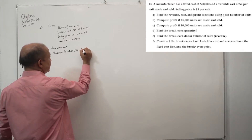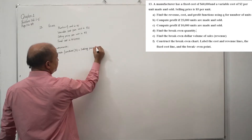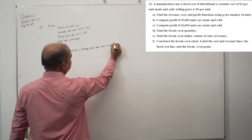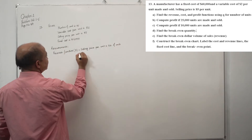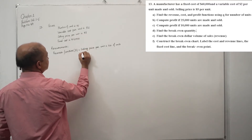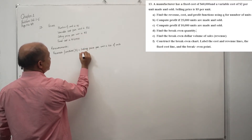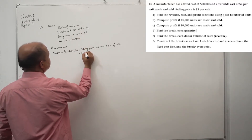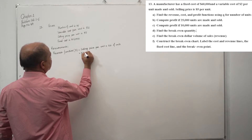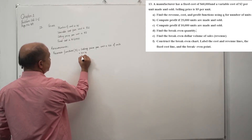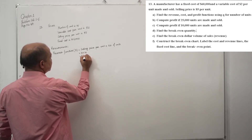Revenue equals selling price per unit multiplied by number of units. Our selling price per unit is $5, and number of units is Q. That means our revenue function is R = 5Q.